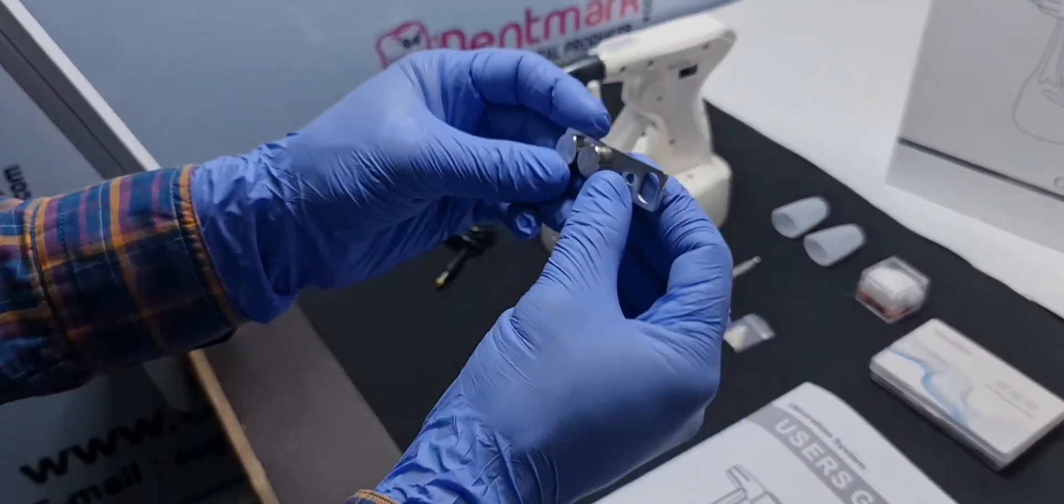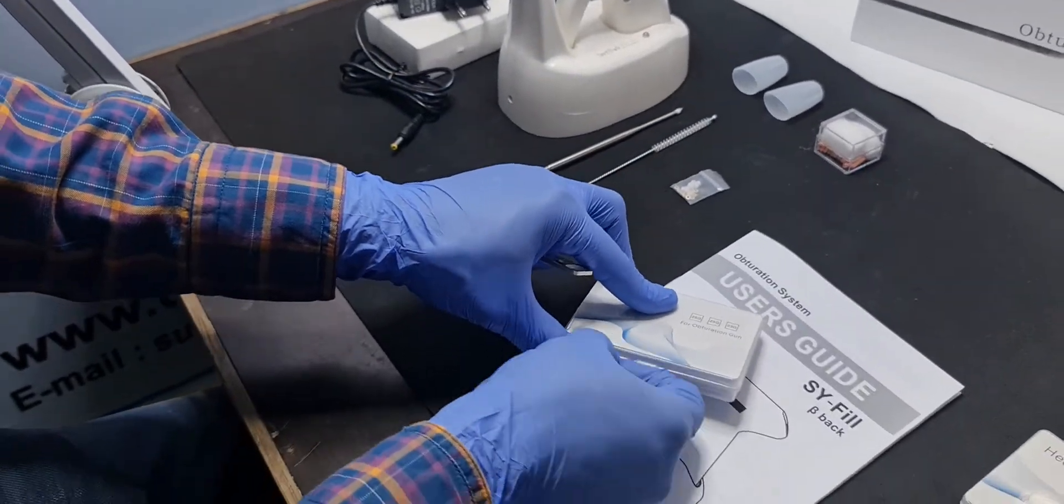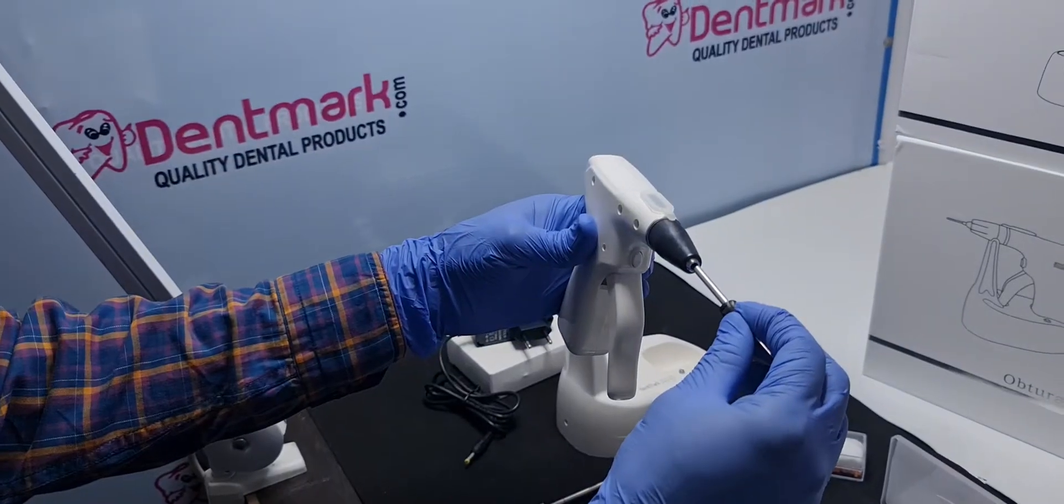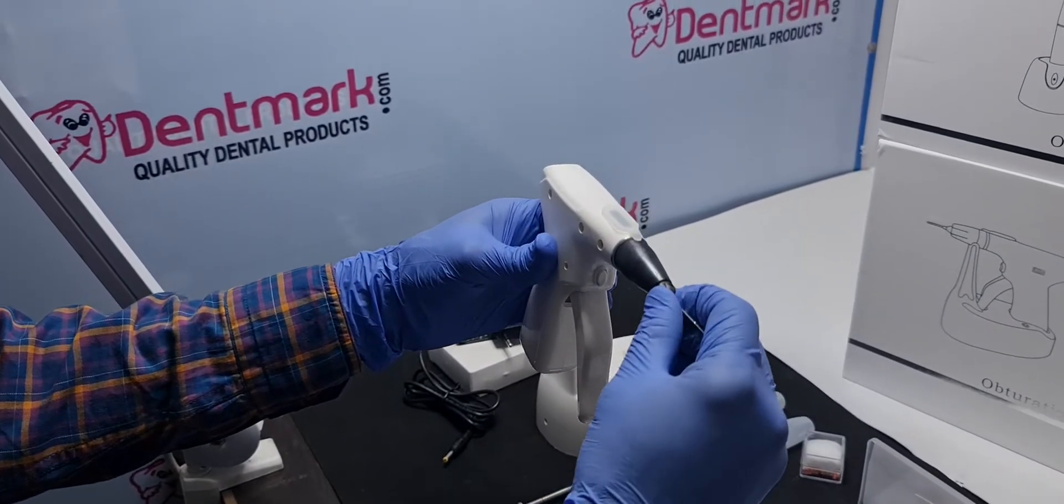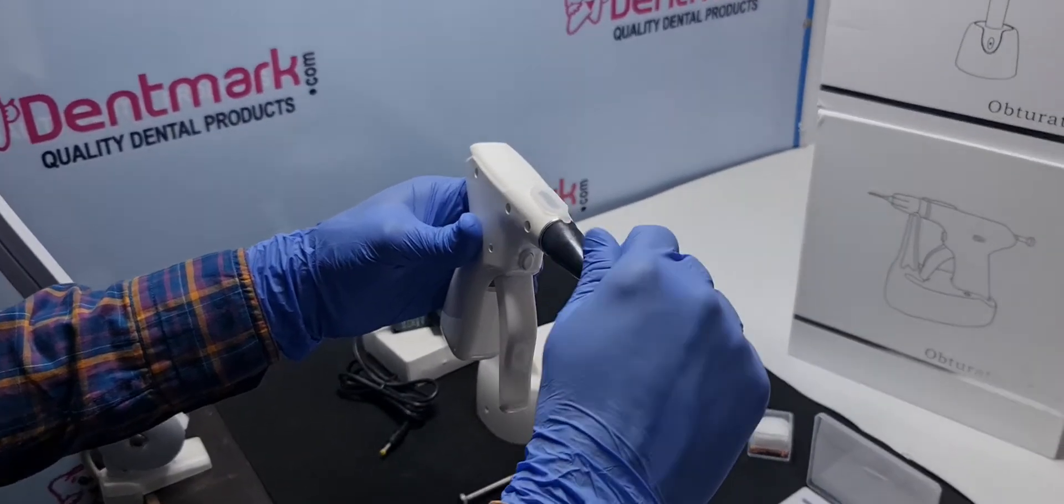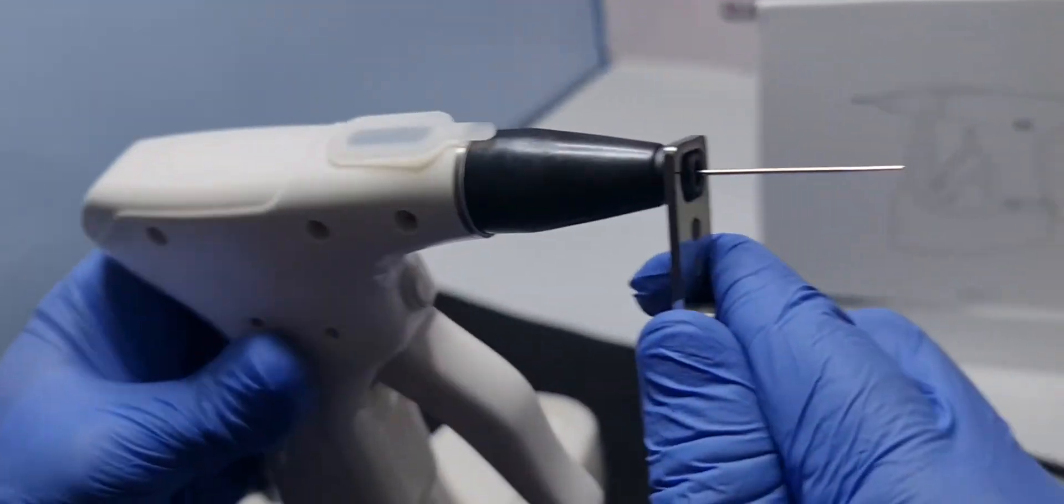This is a wrench to tighten the obturation gun needles. After that you can use this wrench to tighten this.